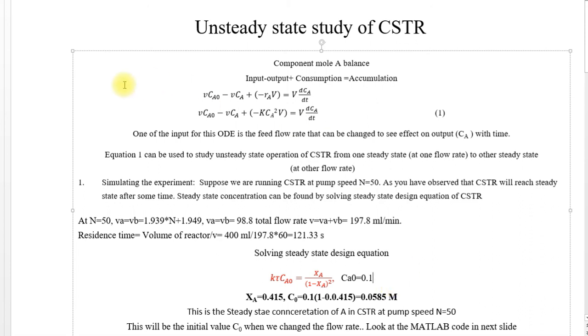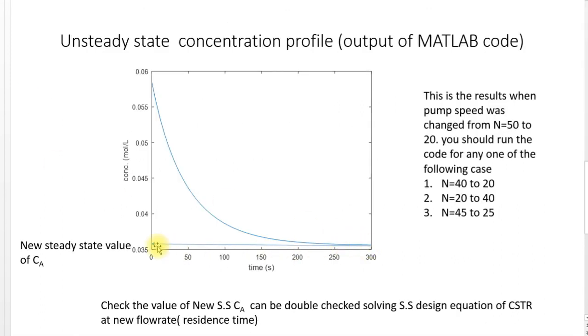It will give you the idea whether this value is correct or not. As you see the concentration is decreasing, why? Because we decrease the flow rate, conversion is increasing, concentration of reactant is decreasing.